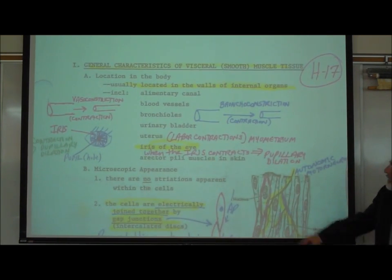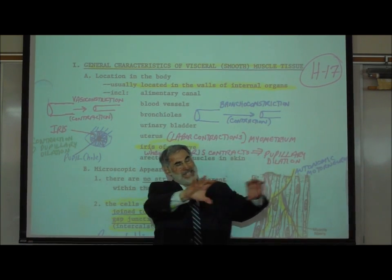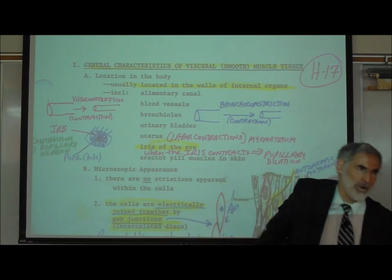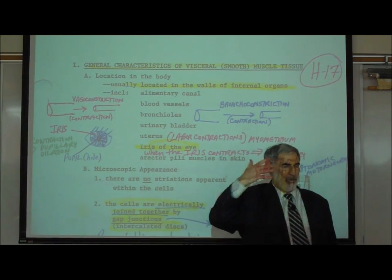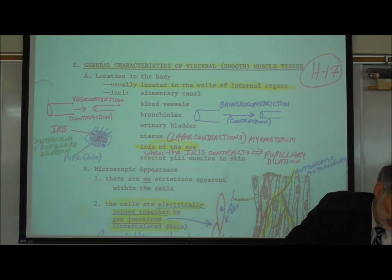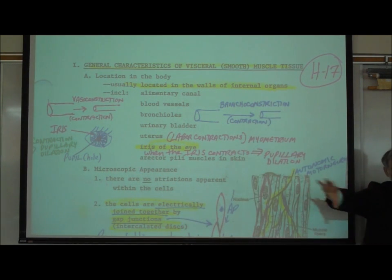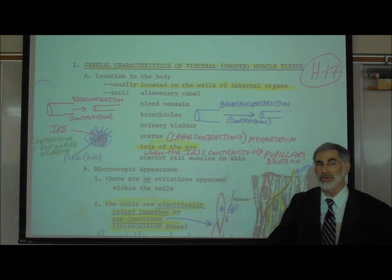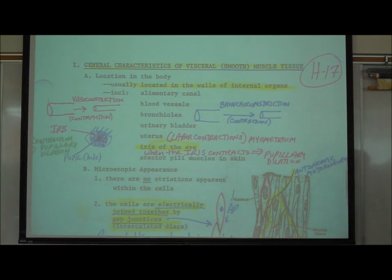This includes our alimentary canal. The alimentary canal is the name for your food tube, your whole intestinal tract. So in the wall of your esophagus, in the wall of your stomach, in the wall of your small intestine, in the wall of your large intestine — that's all the alimentary canal. There is visceral smooth muscle that contracts, creating peristaltic contractions, peristaltic waves.